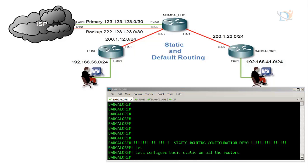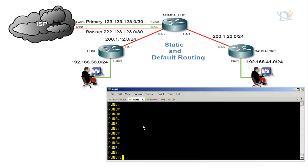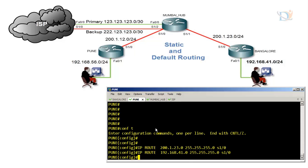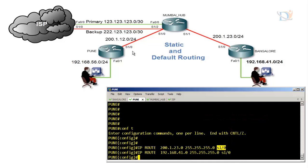Let's configure the Pune router with two static routes. The command is 'ip route' followed by the destination network ID, subnet mask, and the exit interface. Pune router says: whenever it sees a packet for 200.1.23, send it out serial 1/0. The second entry is 192.168.41.0, also sent via serial 1/0, since there is no other interface between Pune and Bangalore.